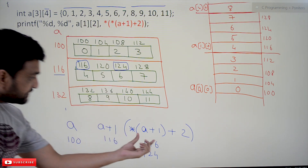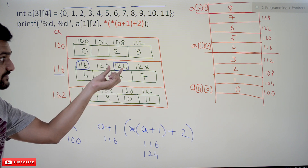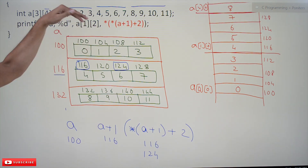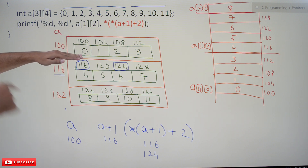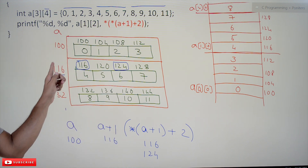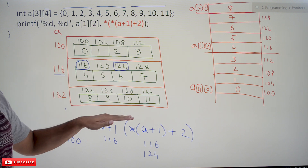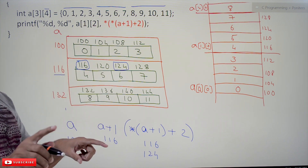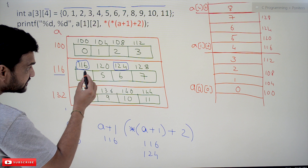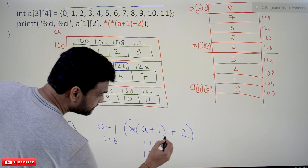So *(a+1) is 116, and *(a+1)+2 means we move two integer steps forward: 116 → 120 → 124. So *(a+1)+2 equals 124. This corresponds to the element at row 1, column 2, which is a[1][2]. We now have the memory address 124 of the desired element.